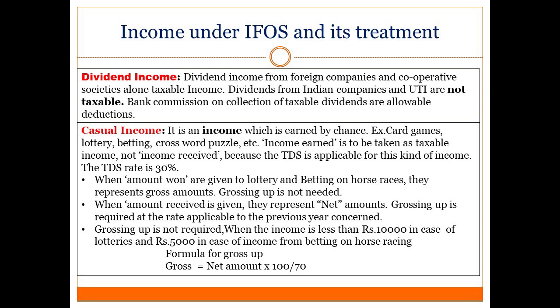When amounts given for lottery and betting on horse races represent gross amounts, grossing up is not needed. When the amount received is given, it represents a net amount and grossing up is required at the applicable rate of 30%. Grossing up is not required when the income is less than Rs. 10,000 in case of lotteries and Rs. 5,000 in case of income from betting on horse races. The formula for grossing up is: gross amount = net amount × 100 ÷ 70.